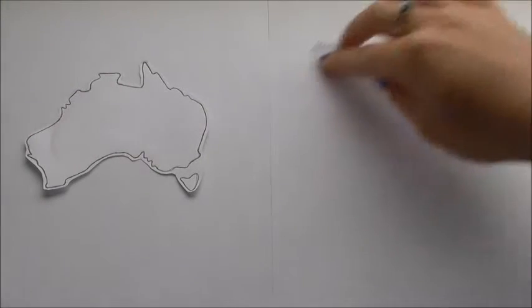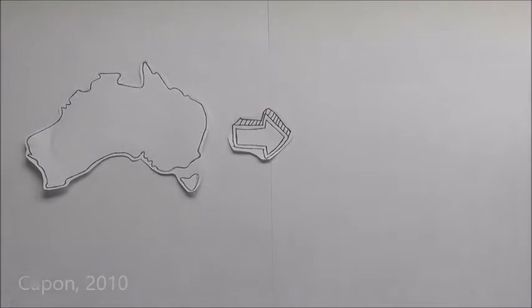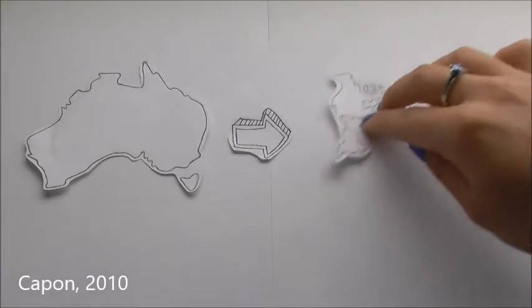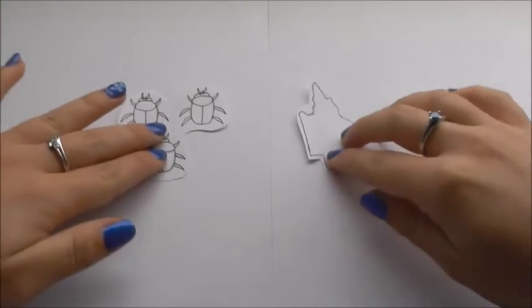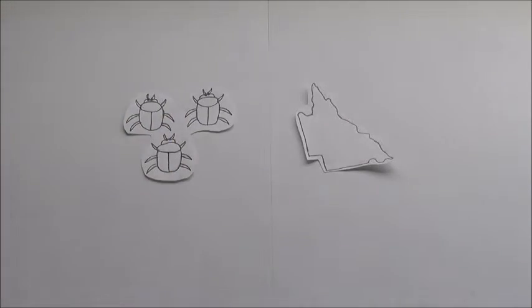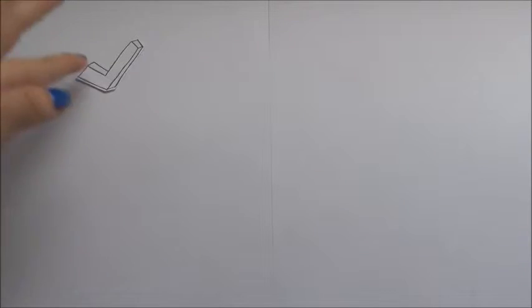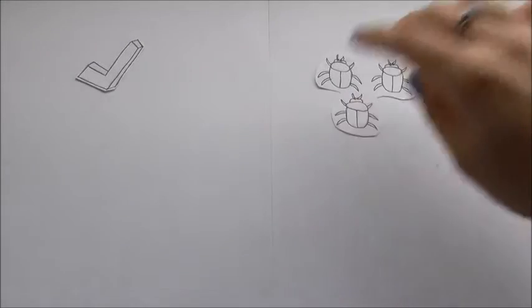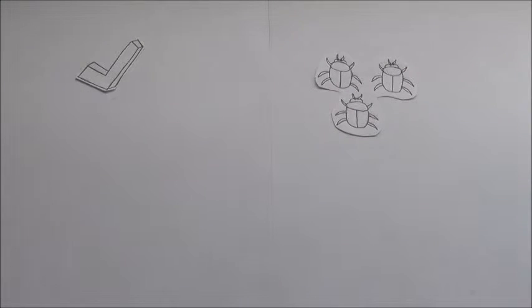Cane toads were introduced into Australia in the 1930s from America, as cane growers believed they would help take out the beetles that were eating the cane growing in northern Queensland. They were thought to be the ideal solution as they are able to eat up to 22 insects per feed.